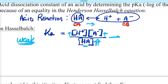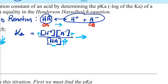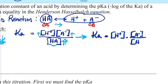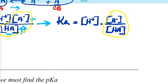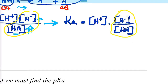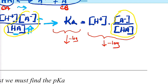Let's rewrite this. Ka equals the proton times the conjugate base A⁻ over HA, the undissociated acid. Now here's where the derivation starts. I'm going to take the negative log of both sides. The negative log of Ka we're going to call the pKa, and the negative log of H⁺ is of course the pH. So we get pKa equals the negative log of H⁺ — which is pH — plus the negative log of the conjugate base over conjugate acid expression.